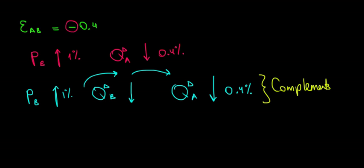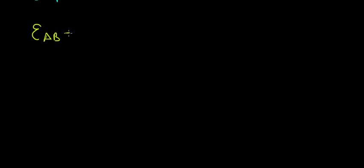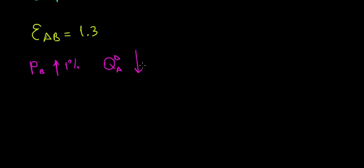Now let's give a different example. What if this elasticity of A and B is equal to 1.3? That means that if the price of good B increases by 1%, then the quantity demanded of good A increases by 1.3%. And why would that be the case?